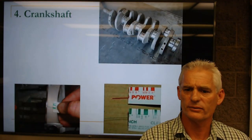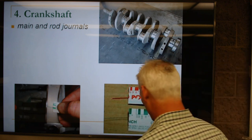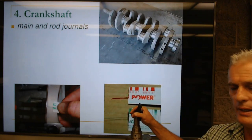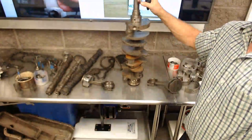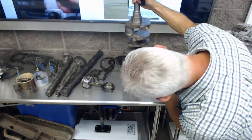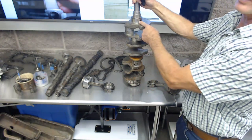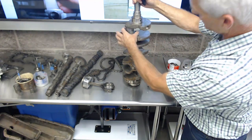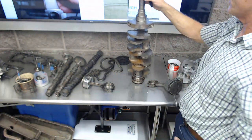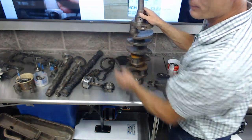Now let's talk about the crankshaft. This 4.7-liter V8 crankshaft has main and rod journals. It's got five main journals — the round parts of the crank where it bolts into the block — and four rod journals. Because it's a V8, two rods connect to each journal: one going to one bank and the other to the other bank.